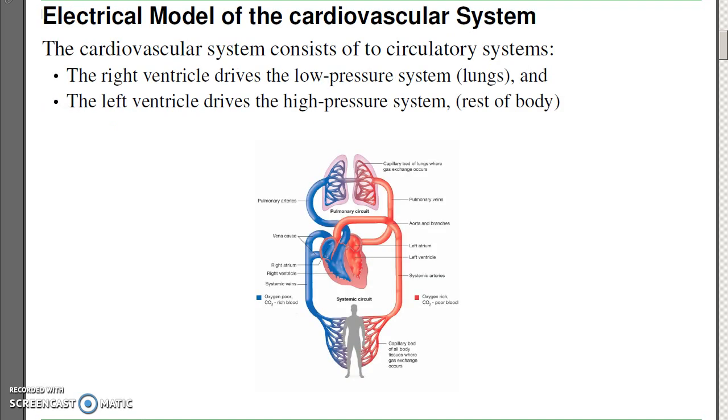Now to start out, the cardiovascular system for a person has two different, very distinct systems. There's the right ventricle that drives the low-pressure system that pumps blood to the lungs. The lungs can't take extremely high pressures, so we need a low-pressure system to send blood to the lungs and have it go back to the rest of the body. The left ventricle drives the high-pressure system that pumps the blood at high pressure to the rest of the body, providing oxygen to all your cells.